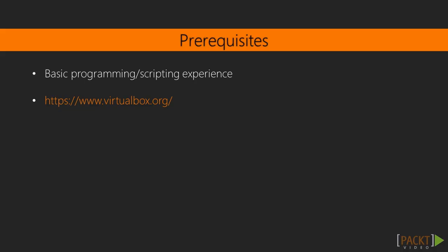The only prerequisite for this course is to have basic programming or scripting experience, which will help you understand the examples quickly. In terms of environment, you only need to download the virtual machine that contains the vulnerable target web application and the Python environment with all the necessary libraries. To run the virtual machine, you will need to install VirtualBox from www.virtualbox.org. I hope you now have a complete grip of what's to come. Let's get started on this wonderful journey.